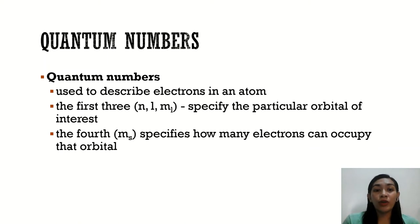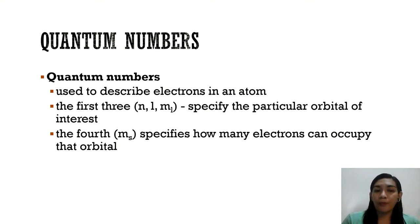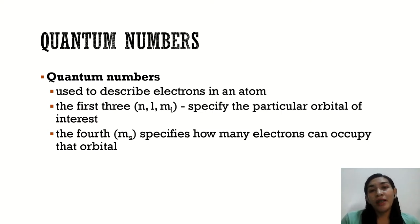We use quantum numbers to describe electrons in an atom. There are actually four quantum numbers. The first three — N, L, and M sub L — specify the particular orbital of interest. The fourth one, M sub S, specifies how many electrons can occupy the orbital. Before we proceed, a quantum is a natural unit or a packet of energy, charge, angular momentum, or other physical properties, and we use that to describe a physical property.